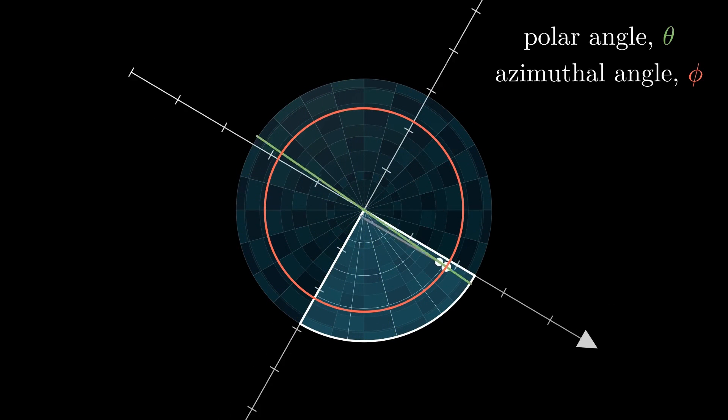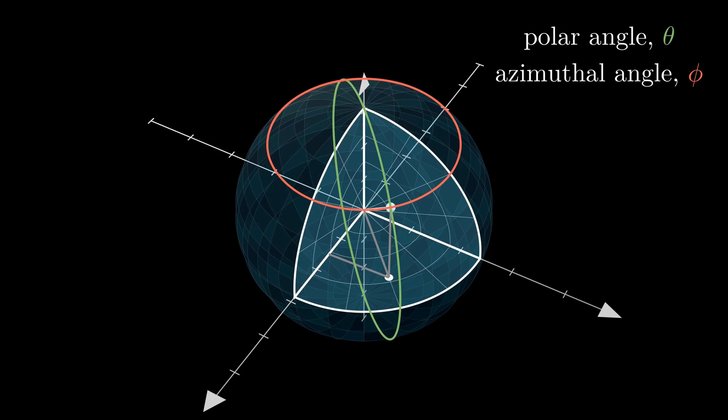Keeping phi constant and varying theta gives us the green circle, with radius equal to that of the sphere, while keeping theta constant and varying phi gives us the red circle, with the radius sin theta.